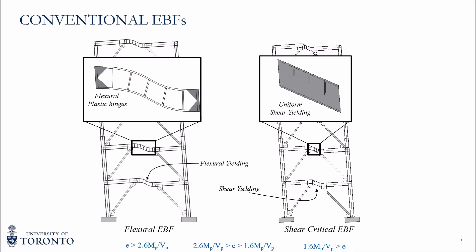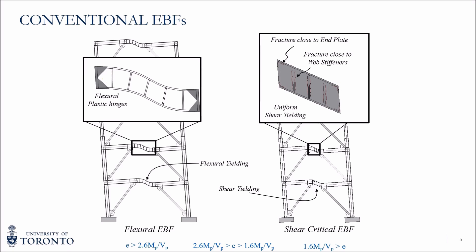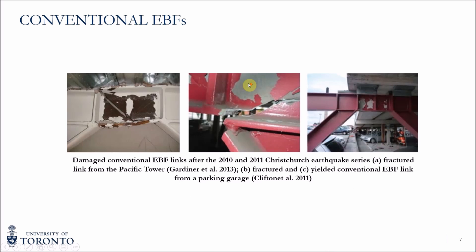However, like every other system, once they are deformed to large enough deformations, they will eventually fail. The failure mechanism is often accompanied by a fracture of the web close to the stiffeners or to the flanges. These are some examples of damage to EBFs during the Christchurch earthquake.